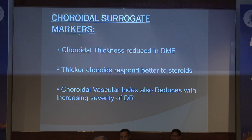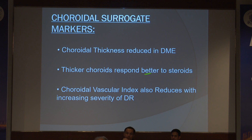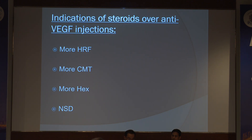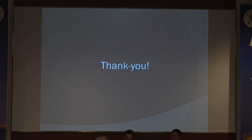Regarding choroidal surrogate markers: choroidal thickness is usually reduced in DME. Thicker choroids respond better to steroids. The choroidal vascular index also reduces with increasing severity of diabetic retinopathy. The indications of steroid over anti-VEGF where I choose include more HRF, more CMT, and more hard exudates — although there is no very conclusive evidence. A two-year head-on comparison study showed anti-VEGF and Ozurdex both work well, but in the first year, Ozurdex does better; long-term, both are equally important. Also, the presence of neurosensory detachment is considered.